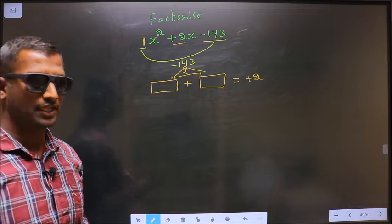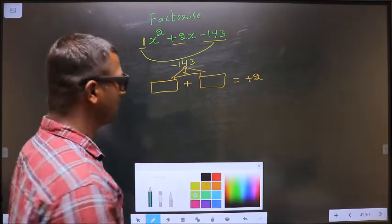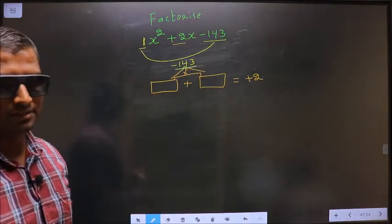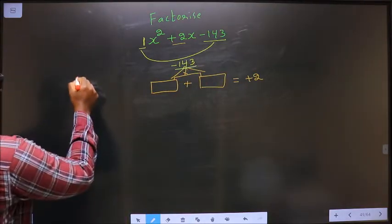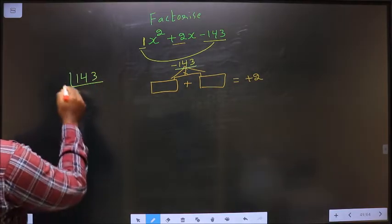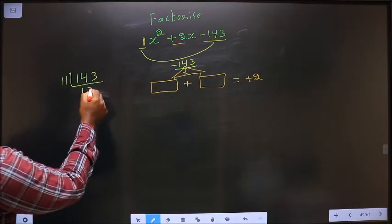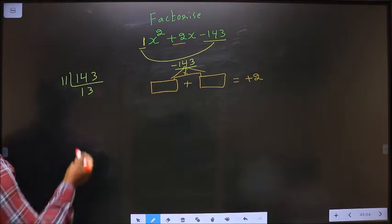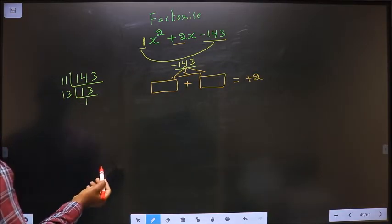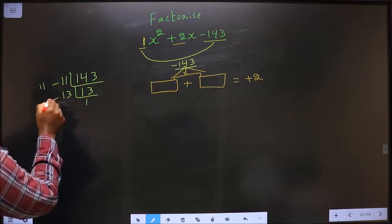To get those 2 numbers, I should take LCM of 143. Starting with 11: 11 once 11, 11 threes 33. Next, 13 once 13. So now the 2 numbers are 11 and 13.